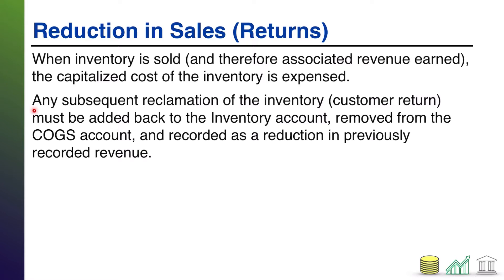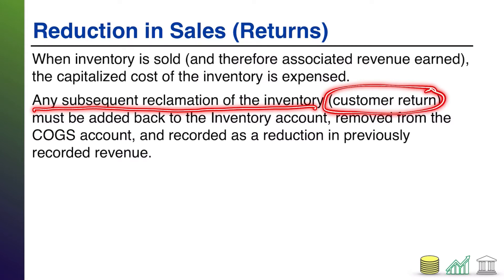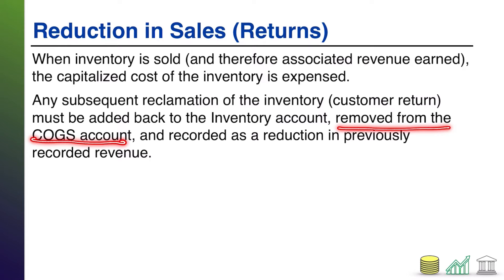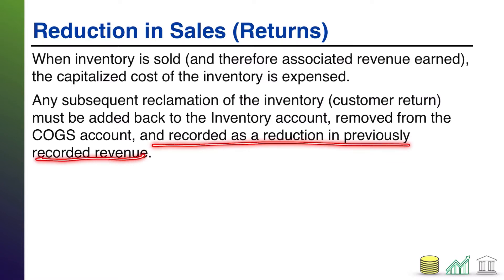However, any subsequent reclamation of that inventory — in this case, we're specifically going to talk about customers returning the goods to us — must be added back to the inventory account, because you've got the inventory back. It must be removed from the COGS account because it's no longer an expense if you have the asset back, and recorded as a reduction in your previously recorded revenue. As part of the sale, you recorded revenue from that customer, so you've got to now reduce that revenue by the amount of the return.